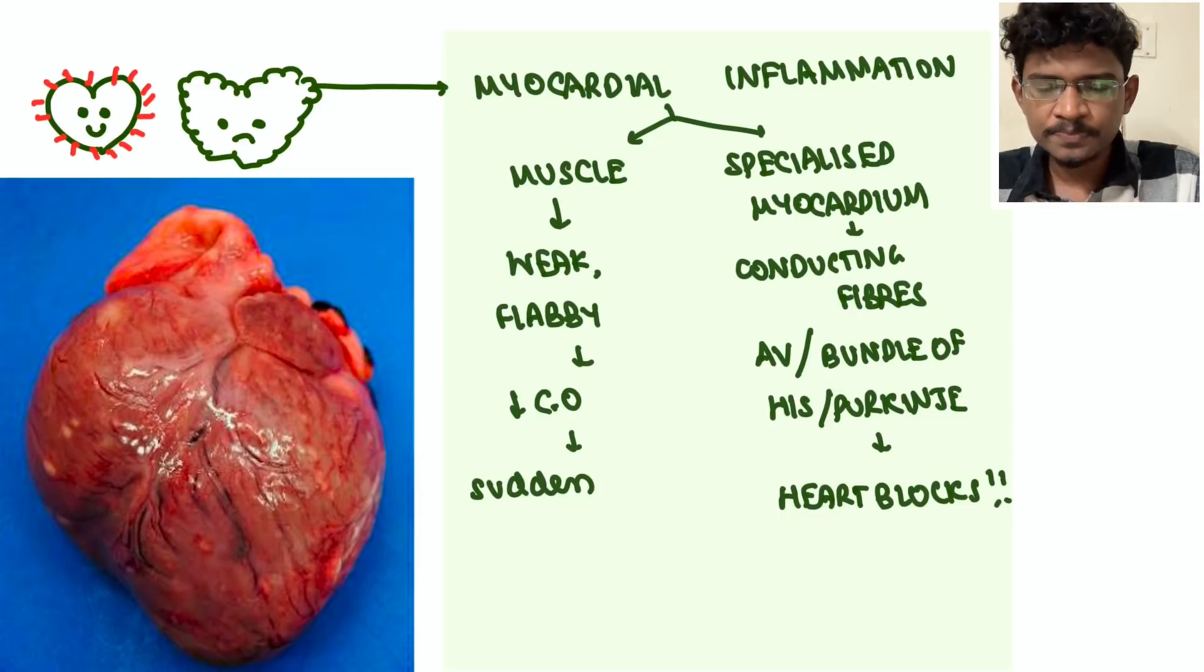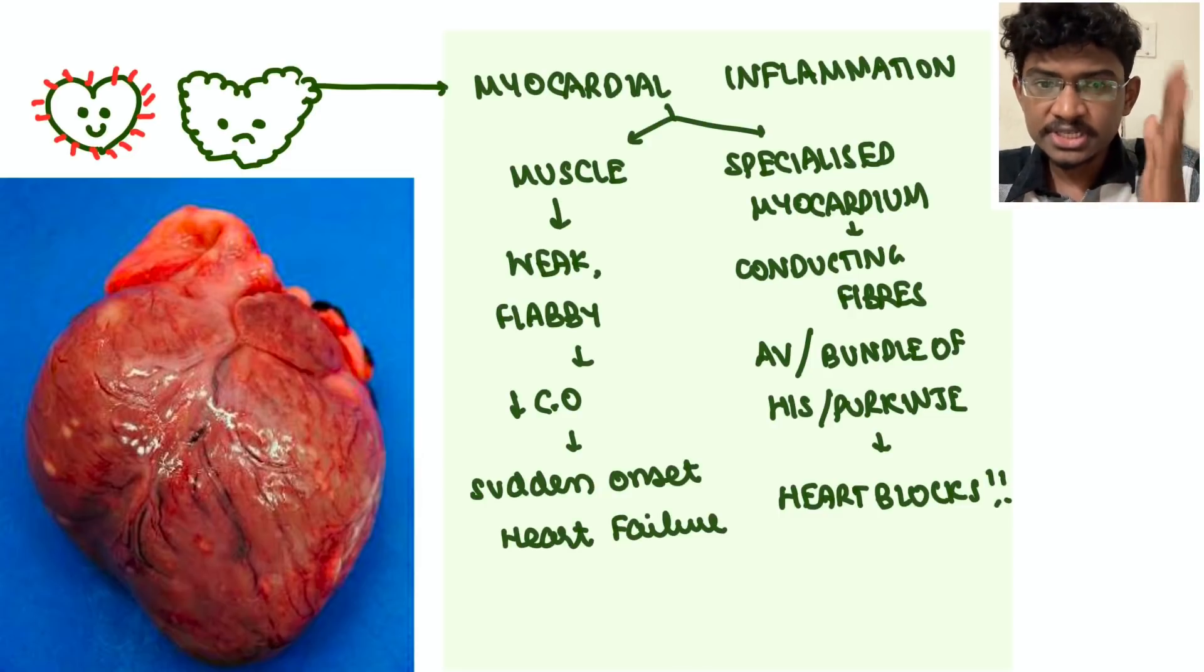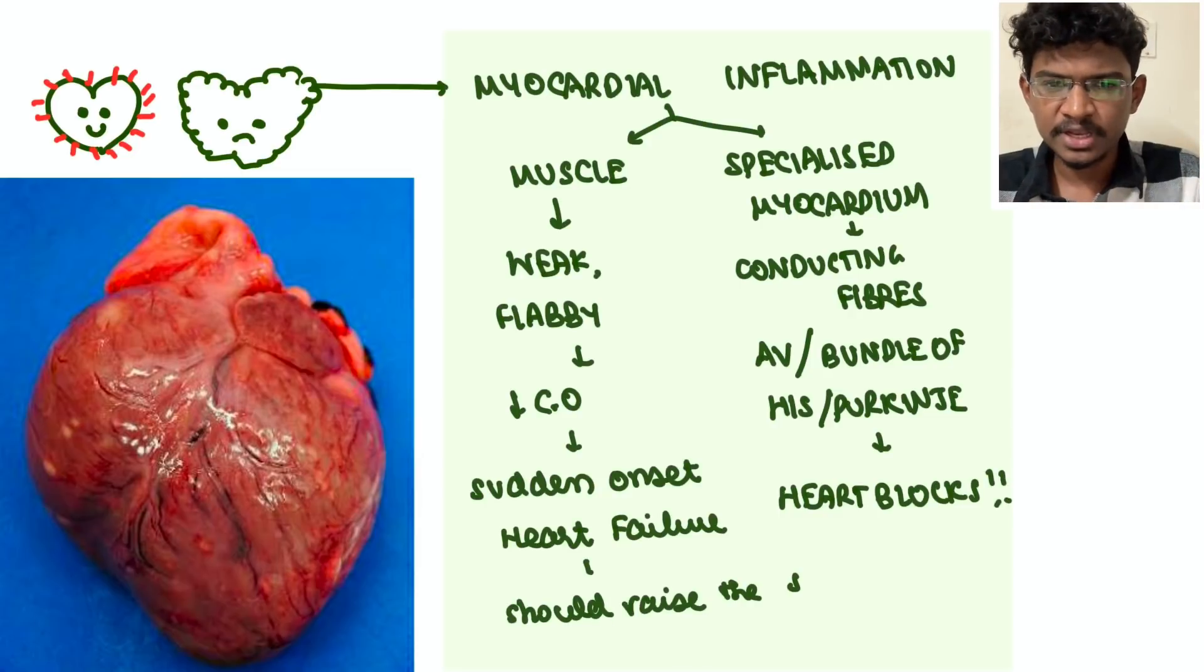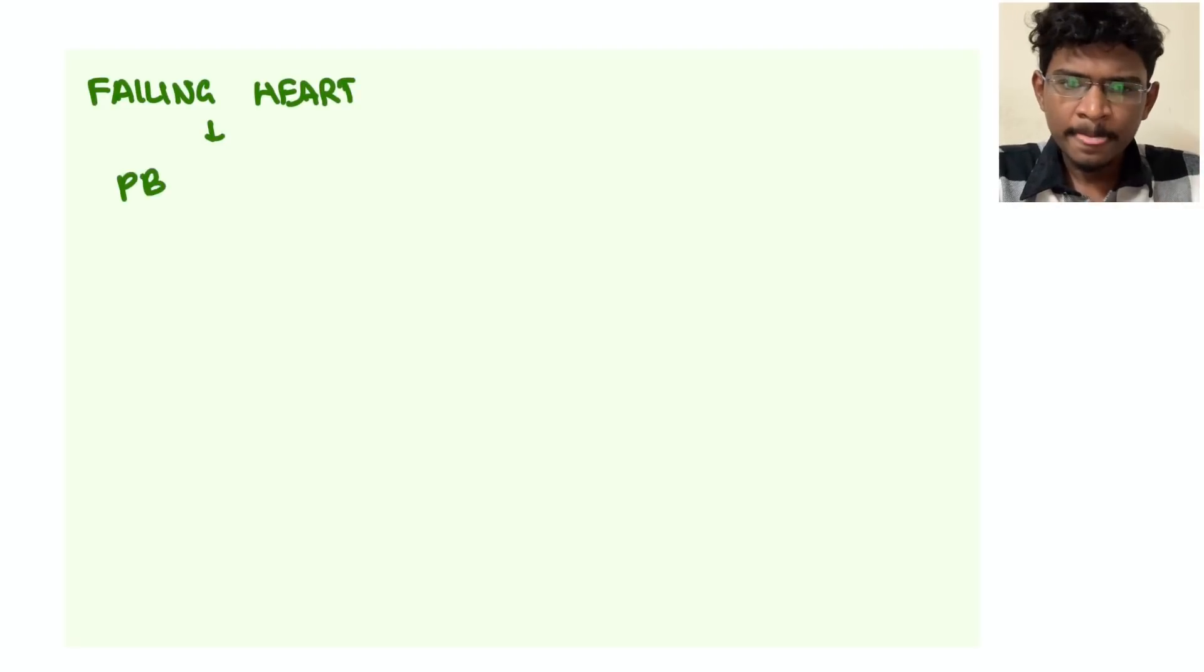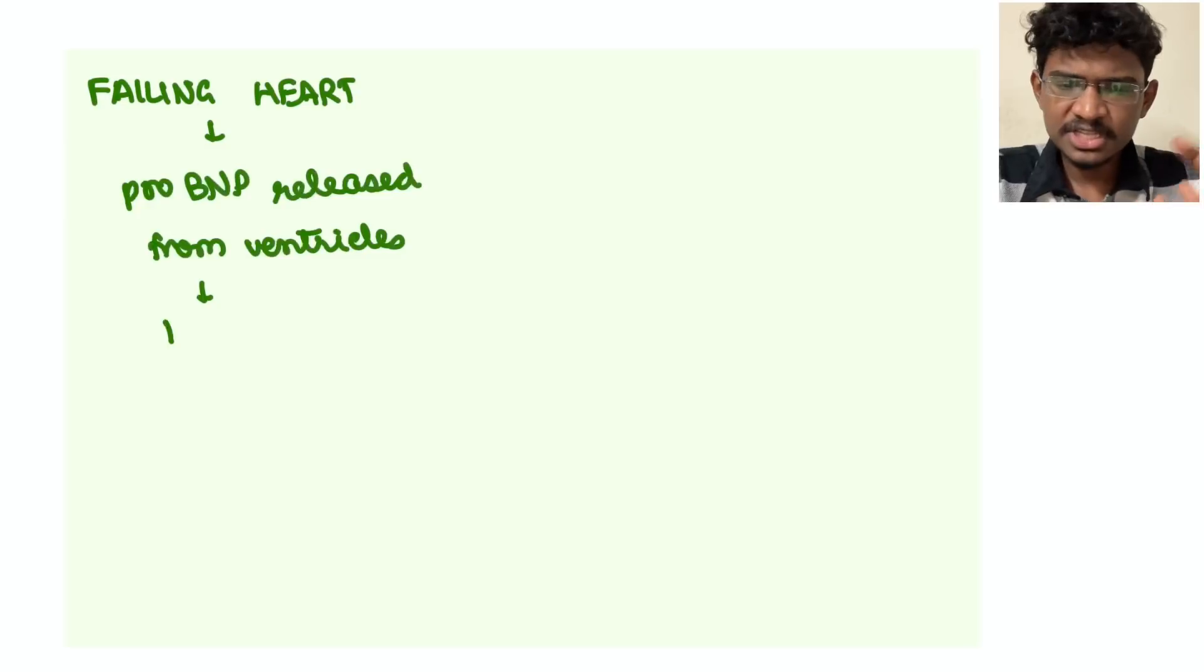Next, the muscular part, if it is flabby, non-contractile, the cardiac output will reduce. Sudden onset cardiac failure happens in any healthy individual. If they suddenly go into cardiac failure, then you should raise the suspicion of myocarditis. COVID resulted in many cases of myocarditis. Then the diagnosis thing: the heart is failing, so ventricle say BNPs will be released - pro-BNP, but it's not that accurate.